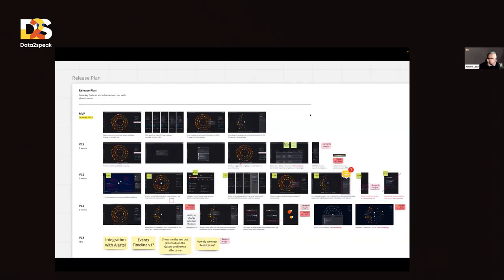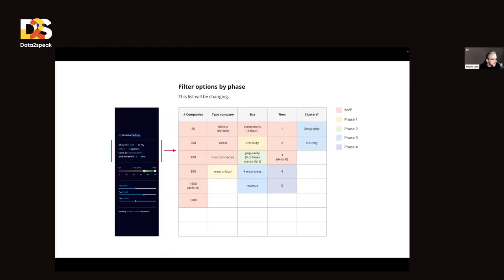We also plan for the future. It's important to plan for the MVP — the minimum lovable product. We know it's impossible to do everything right as an MVP; it's a continuous process. So once we had the MVP, we planned for future cycles, future sprints — VC1, VC2, VC3. These are all enhancements that are coming. We can actually tell our customers many of the improvements that will come, including what new filters will be added and when.